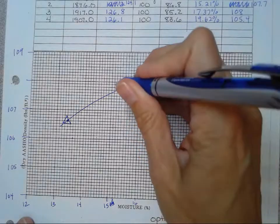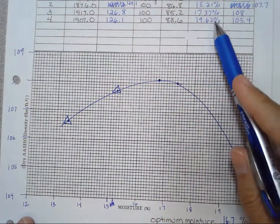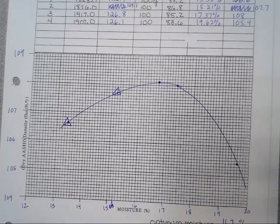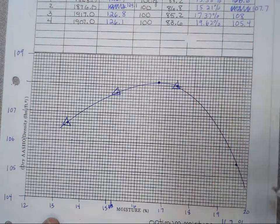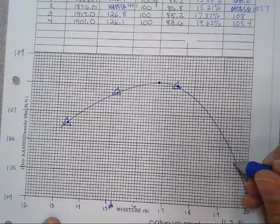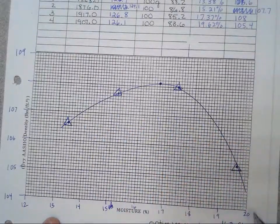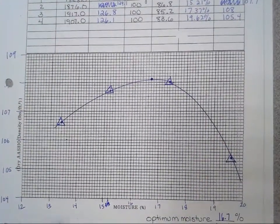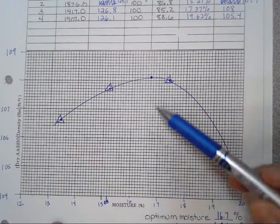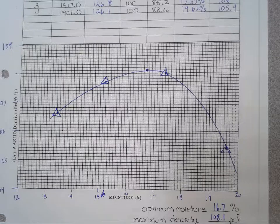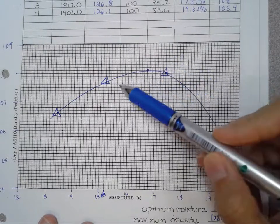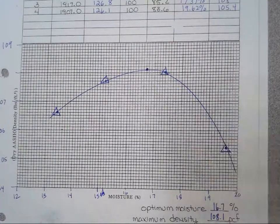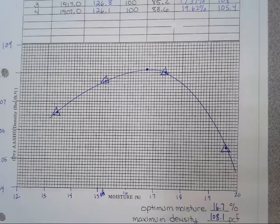15.21 and 107.7, right in there, 13.37 and 108, I'm sorry, 17.37 and 108 in here, and then 19.62 and 105.4. And so when we connect that up, we do get this high point a little bit before that third one. I call that at about 16.7% and 108.1 maximum density. But, you know, as long as you're somewhere in that range, it's going to go up a little bit before that second and third test connect with each other. That's where you're going to find your optimum moisture and your maximum density.